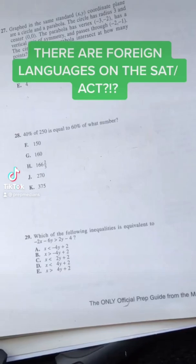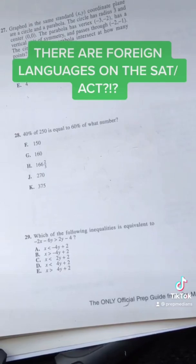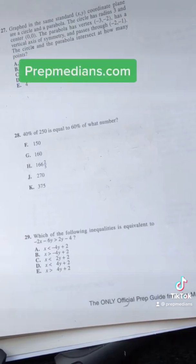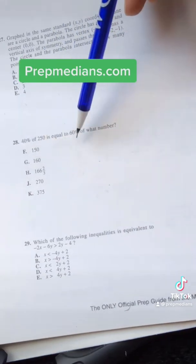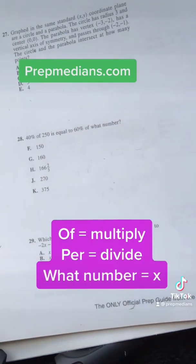You know that the SAT and ACT test foreign languages? No, I'm not talking about Spanish, French, or Latin. What I'm talking about is math. And what you want to do when you approach a word problem on the SAT or ACT is translate it from English to math. Specifically, remember this. Of means multiply and per means divide.